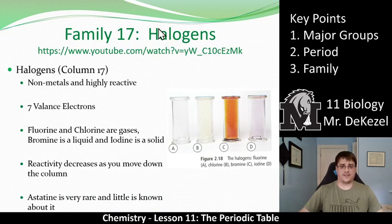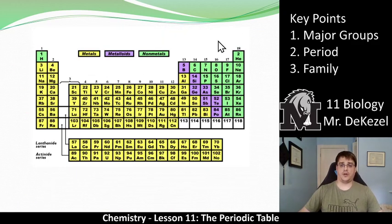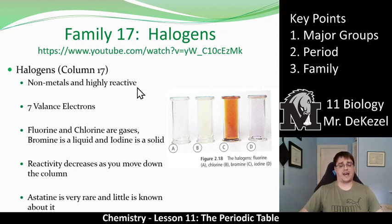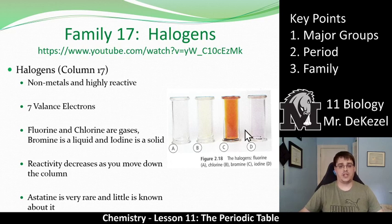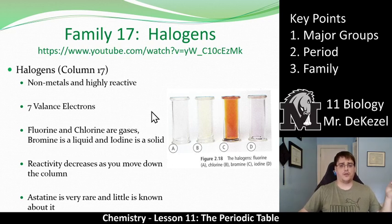Family 17 is the halogens. Halogens are column 17, starting at fluorine and going down: chlorine, bromine, iodine. They are non-metals — essentially gases — and they are very, very reactive, so they're kept in cylinders as gases. They have seven valence electrons. Fluorine and chlorine are gases, while bromine is a liquid and iodine is a solid. The reactivity on this side decreases as you move down the column — this is the opposite of the alkali metals and alkaline earth metals. Fluorine and chlorine are the most reactive. Astatine is at the bottom, is very rare, and very little is known about it.